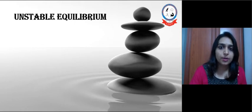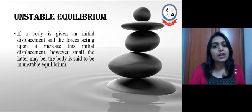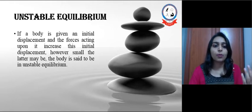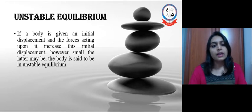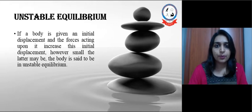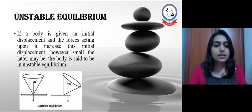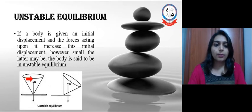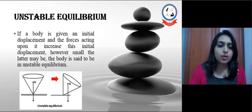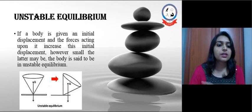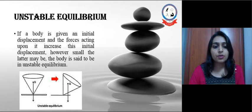Next is unstable equilibrium. If the body is given an initial displacement and forces acting upon the cone, it increases its initial displacement, however small, but that body assumes a new position, then it is said to be in unstable equilibrium. For example, if the cone is placed in such a way like shown in the figure and if we apply a force on it, then that position is not possible for that cone. With less base of support, it is not possible to maintain the position and the initial displacement will be more after the force and the body will assume a new position known as unstable equilibrium.